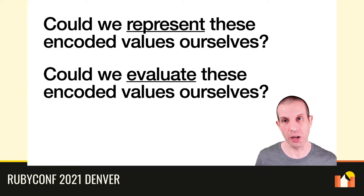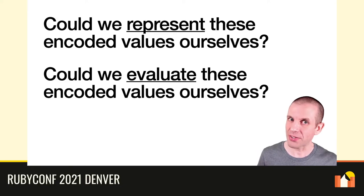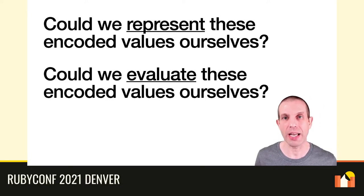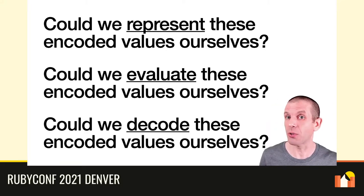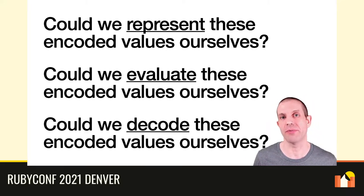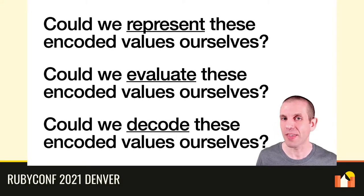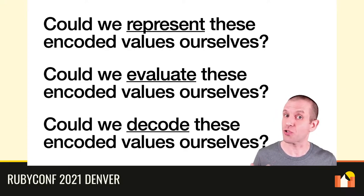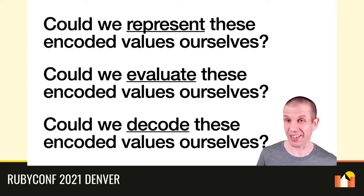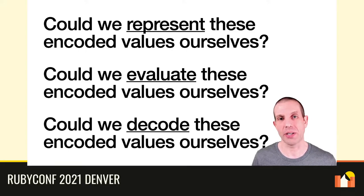Secondly, if we have our own objects for encoding values, can we explicitly evaluate them and recreate the computational behaviour that we get for free with procs? And finally, if we do manage to recreate that behaviour and perform computations with our objects, can we decode the results back into useful information afterwards? If we could do all three of these things, we'd no longer be relying on Ruby's built-in implementation of procs to bring our encodings to life. We'd have constructed our own implementation that we can understand and control, and I think that would be pretty cool.